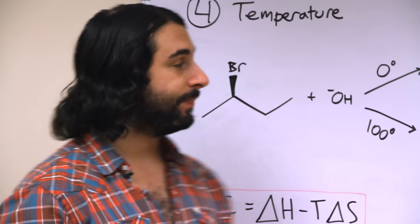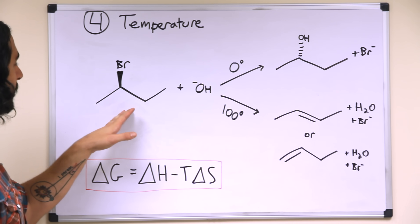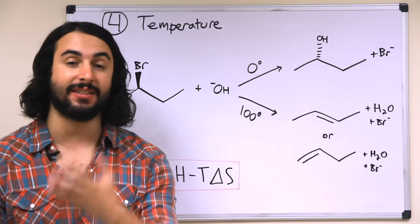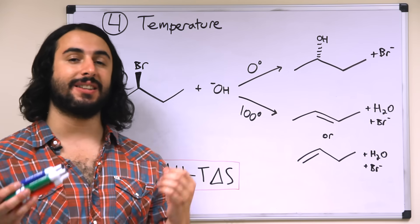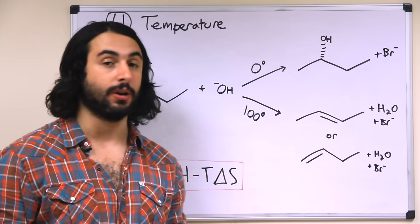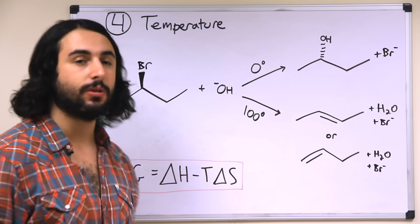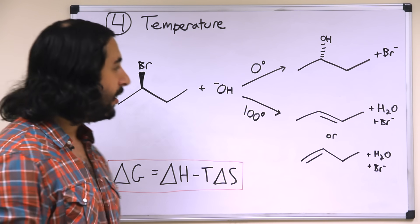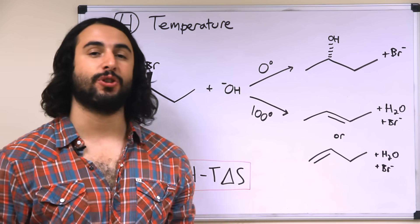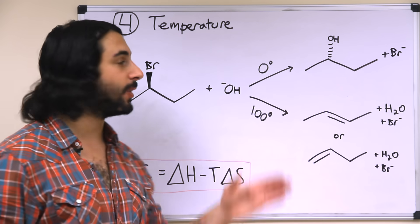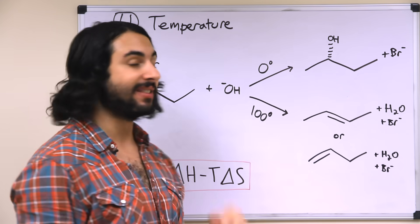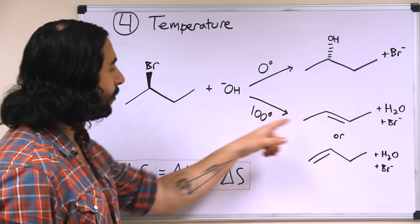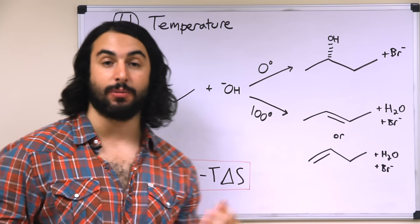The last thing we want to look at is temperature. Let's take a secondary haloalkane with hydroxide — we know we're probably looking at SN2 or E2. We can look at temperature to choose which one occurs. Taking two hypothetical temperatures, 0°C as cold and 100°C as hot — cold temperatures favor substitution, so at 0°C it's much more likely to get the SN2 product. Hot temperatures favor elimination, so at 100°C we're much more likely to get one of the elimination products.